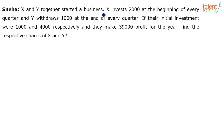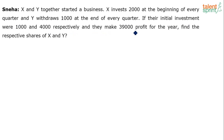X and Y together started a business. X invests 2,000 at the beginning of every quarter and Y withdraws 1,000 at the end of every quarter. Their initial investments were 1,000 and 4,000 respectively, and they make 39,000 profit for the year. Find the respective shares of X and Y.